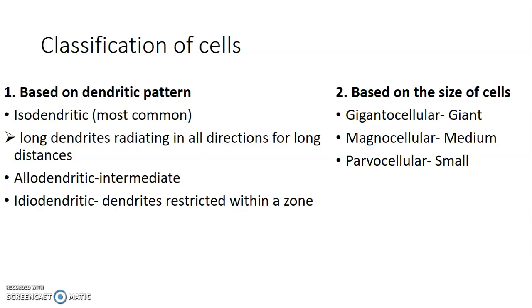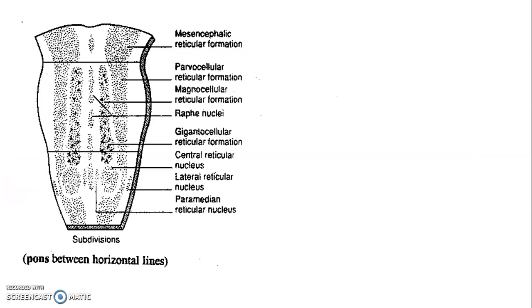Cells of the reticular formation can also be classified based on size. Gigantocellular cells are giant, magnocellular are medium size, while parvocellular are small in size.